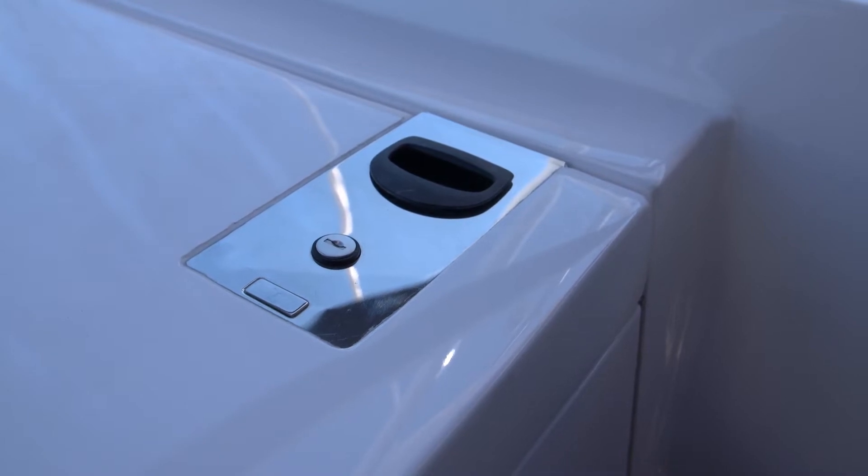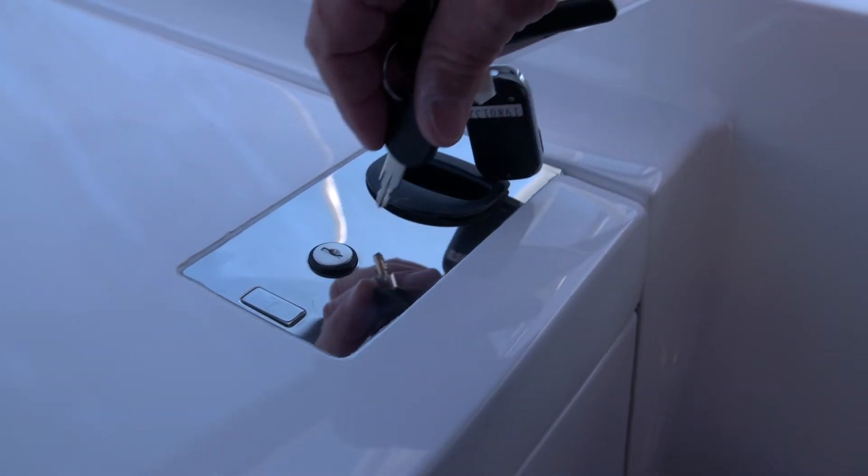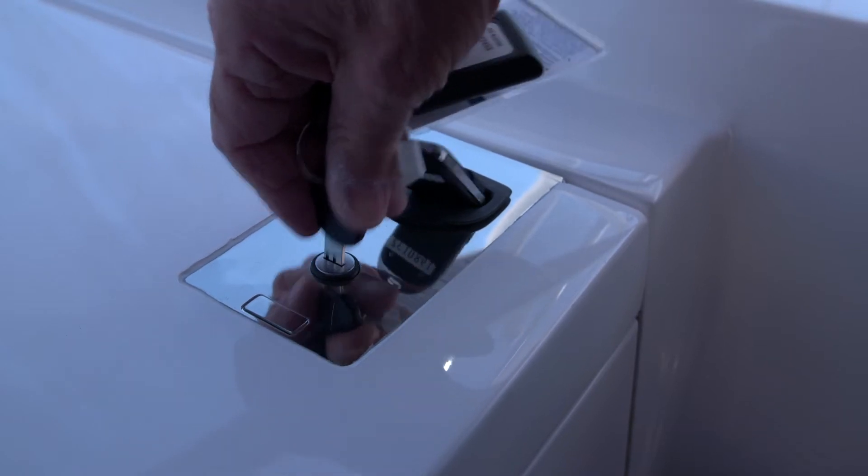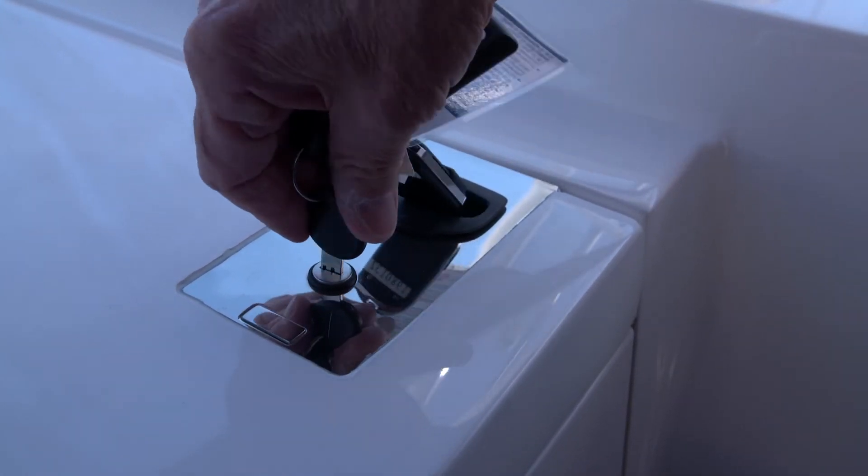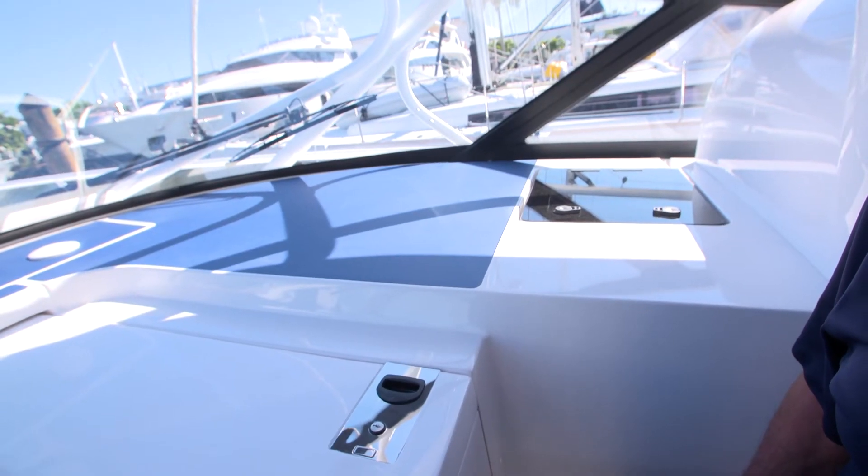To lock the door, you'll take the key that's in your owner's packet, insert it into the lock itself, and then turn it to the right. Now your cabin's secure.